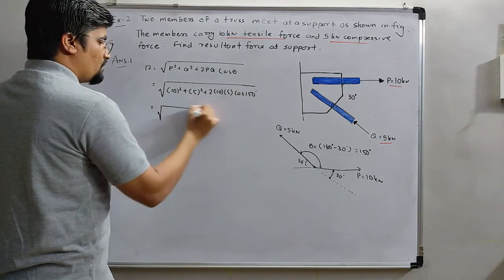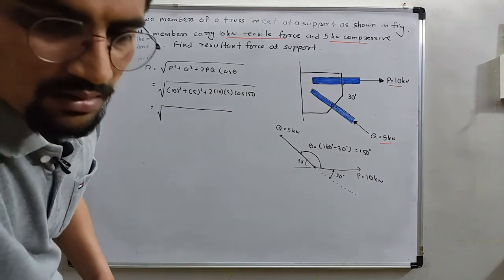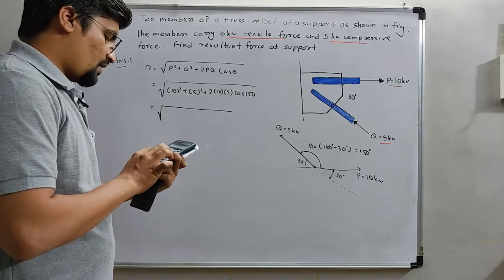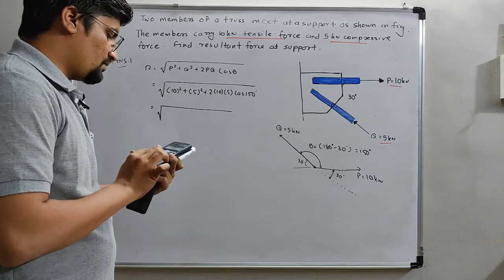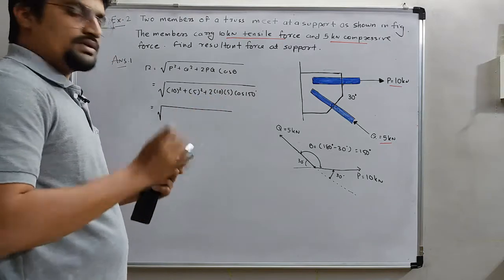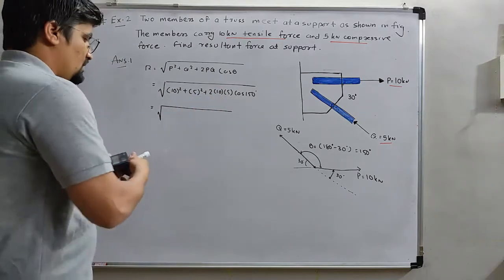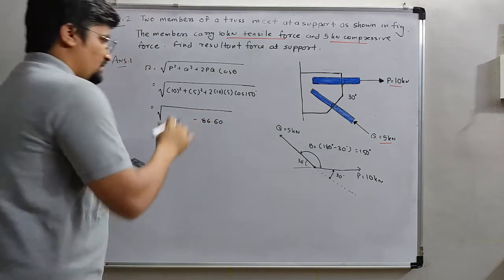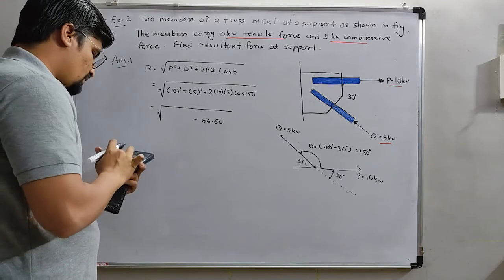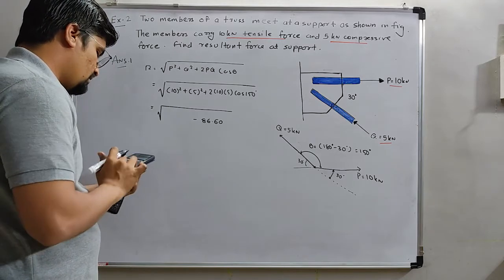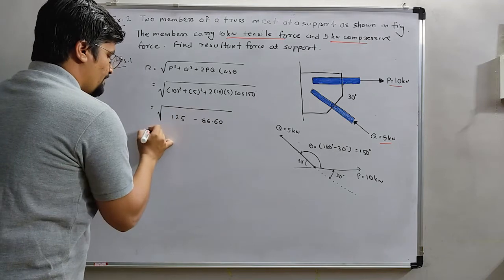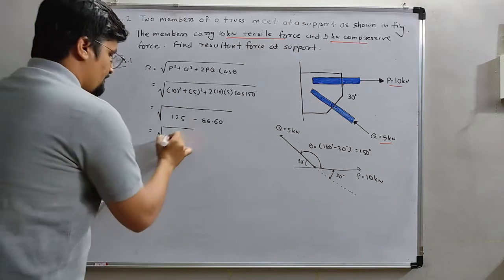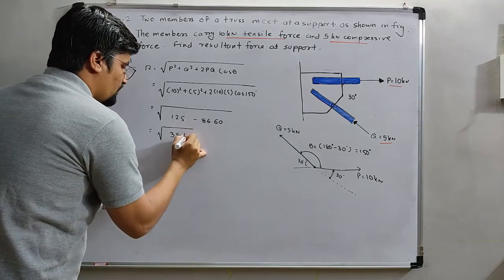Now what will be the answer? Cos 150 into 5 into 5 into 10 into 2, this is minus 86.60. So I write here, this is minus 86.60. And here we have 10 square plus 5 square which is 125.